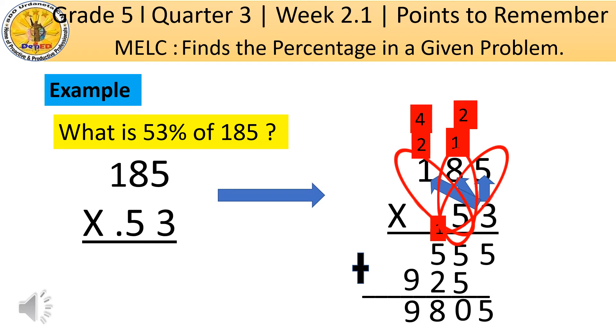Transfer our answer to the left side. Then let us count the number of decimal places in the multiplier factors: one, two. So there are 2 decimal places. Therefore, we will put 2 decimal places in our product. Let us count from right to left: one, two. Then place the decimal point. Therefore, the product is 98.05. So 53% of 185 is 98.05.